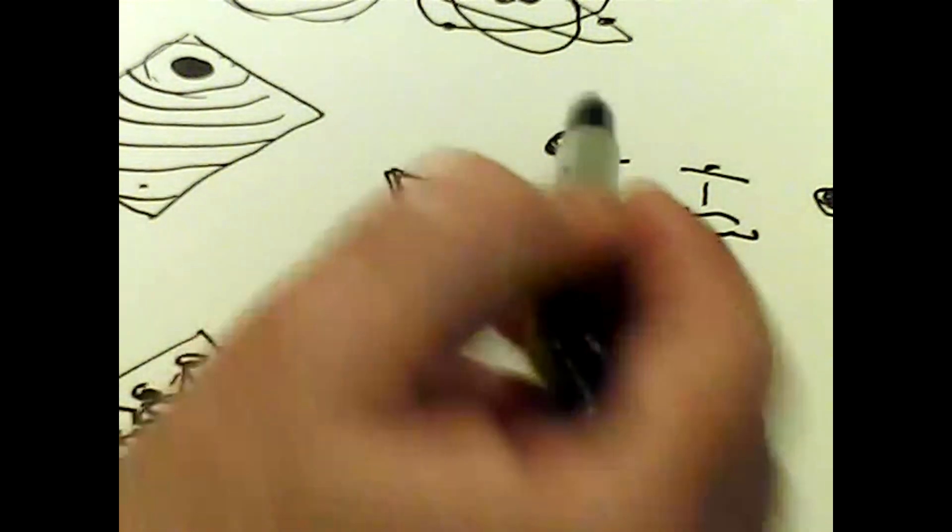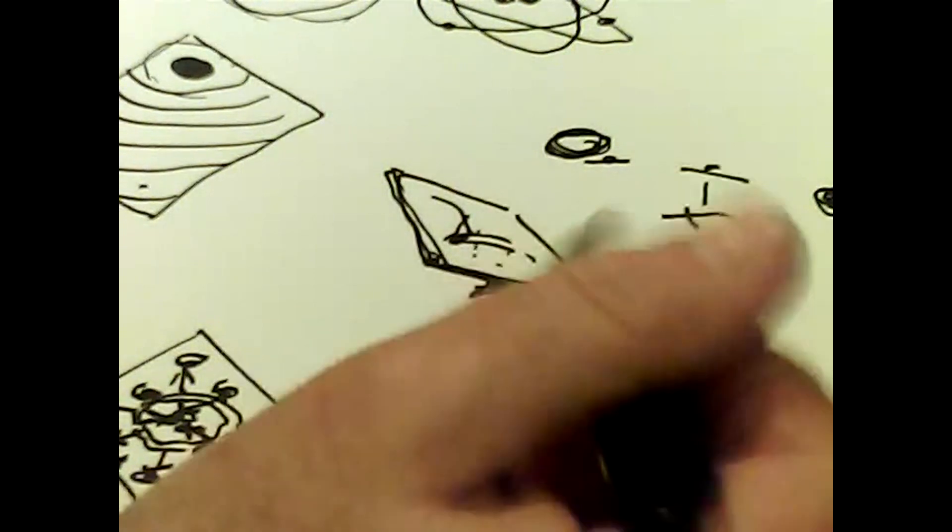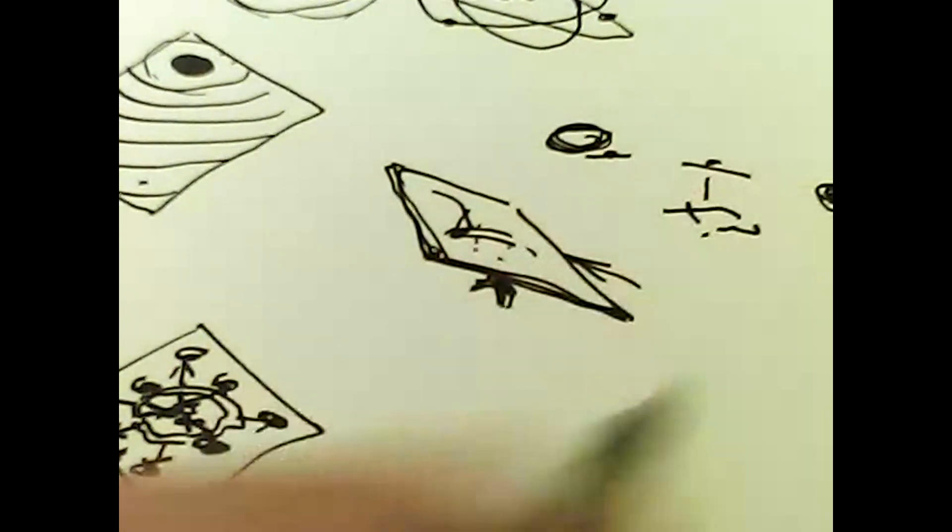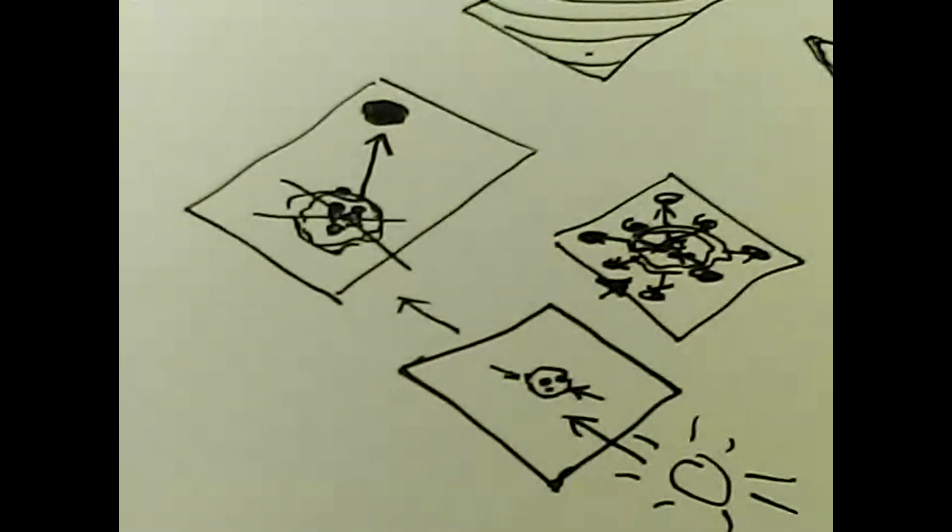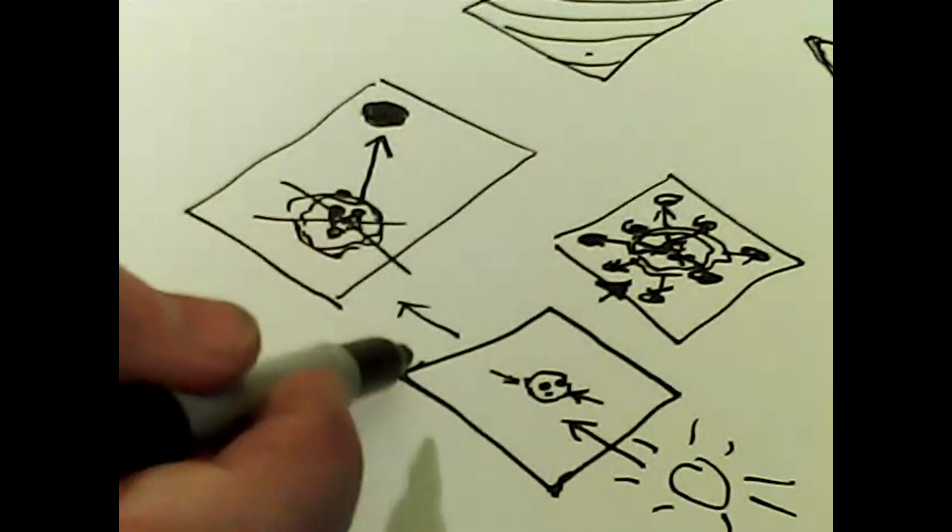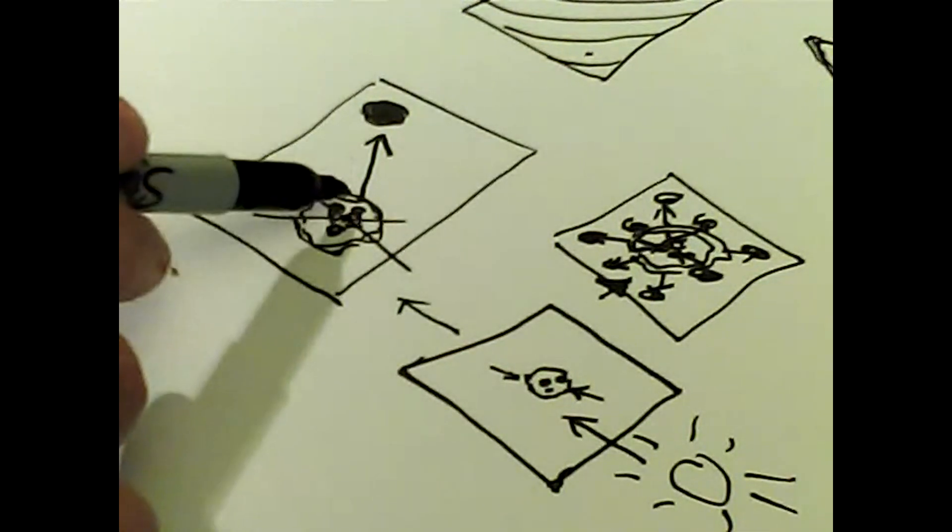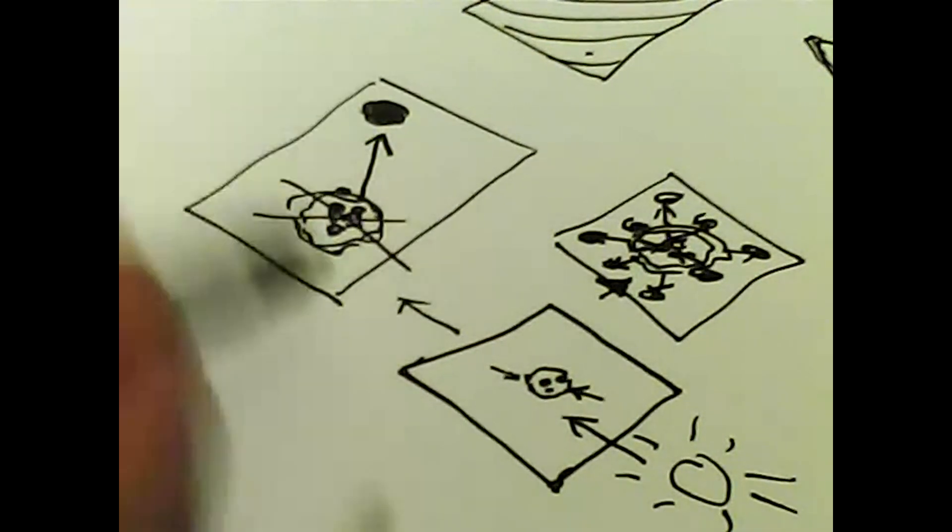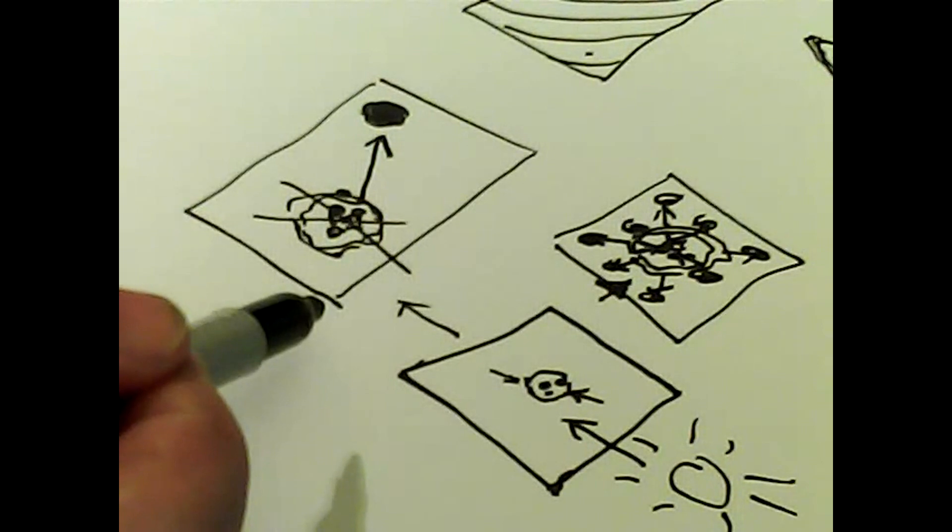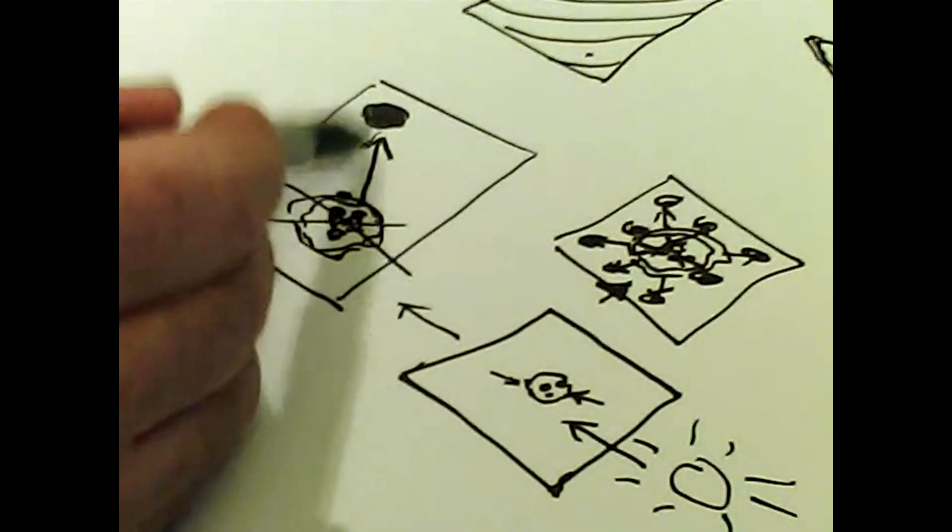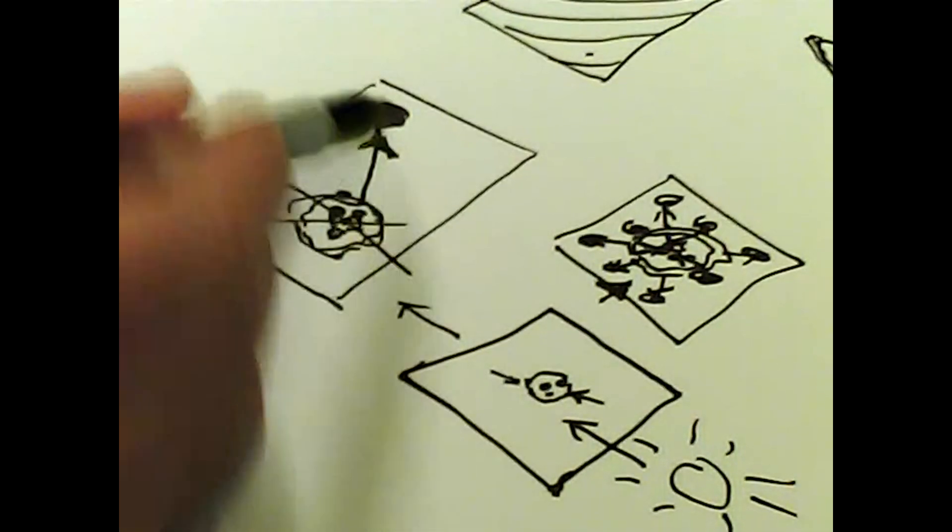So that tells us that Einstein's theory of space and time distorting is wrong and it has to be something else. And my something else is quite simply probability. If an atom is in the probability gradient it will tend to move towards the area of highest probability of its particles existing there. And of course, as each little bit moves...